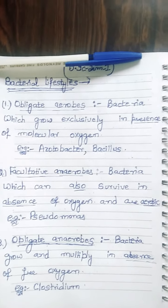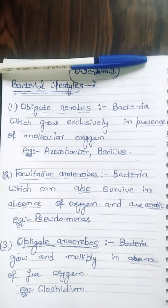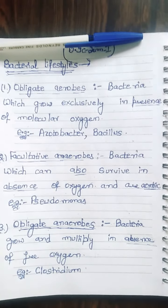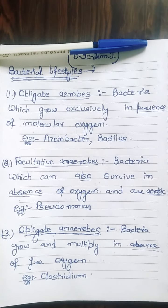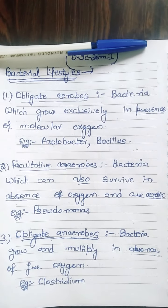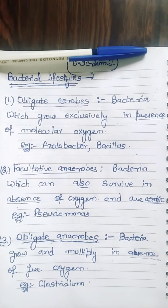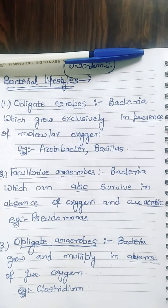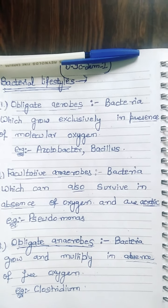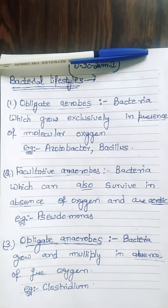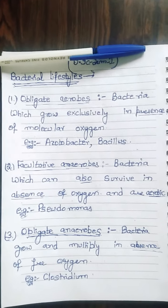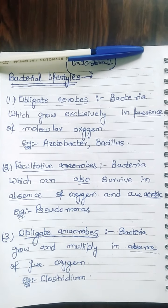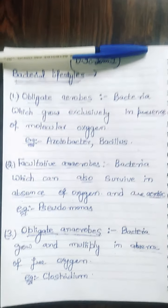What is the difference between facultative aerobes and facultative anaerobes? Facultative anaerobes are bacteria which are aerobic but can also survive in the absence of oxygen — that is the key difference between the two.